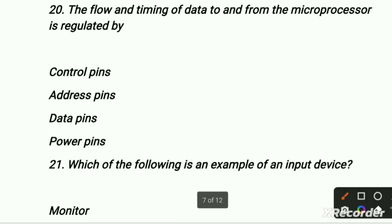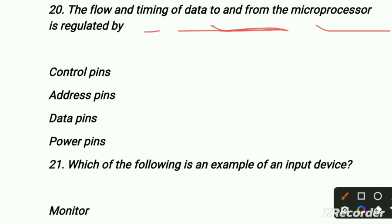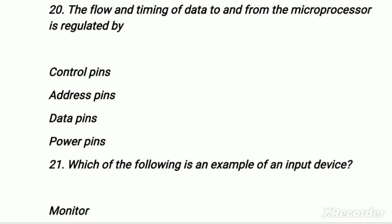The flow and timing of data to and from the microprocessor is regulated by — control pins. The control unit controls all data, so it is basically related to control pins. The first option is the right option.